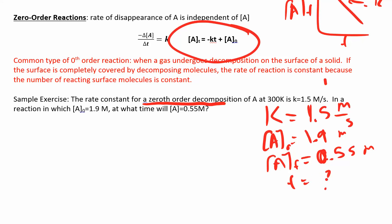All right. So we're solving for T this time. So A at some time is 0.55. K is 1.5 times the time plus our initial, which is 1.9. Okay. So I'm going to subtract out 1.9.